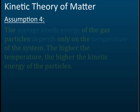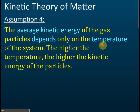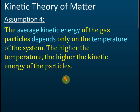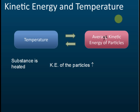The fourth assumption is the most important — you must memorize it because most of the time we are going to use this to explain the change of state. The average kinetic energy of the particles depends only on the temperature. Kinetic energy refers to the movement — how fast the particles move. The higher the temperature, the higher the kinetic energy of the particles. We will use this to explain most phenomena that involve changes in matter. So temperature is related to average kinetic energy.